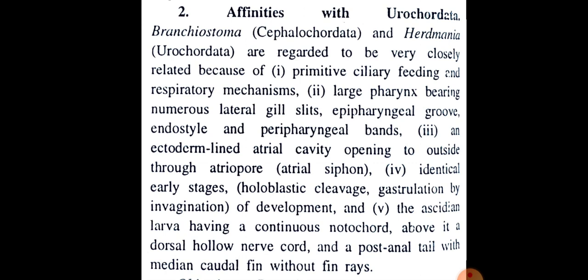Affinities with Urochordata. Branchiostoma and Herdmania are regarded to be very closely related because of: primitive ciliary feeding and respiratory mechanisms; large pharynx bearing numerous lateral gill slits; epipharyngeal groove; endostyle and peripharyngeal bands; ectoderm-lined atrial cavity opening to outside through atriopore; identical early developmental stages including holoblastic cleavage and gastrulation by invagination; and the ascidian larvae having a continuous notochord, dorsal hollow nerve cord, and a post-anal tail with median caudal fin without fin rays.